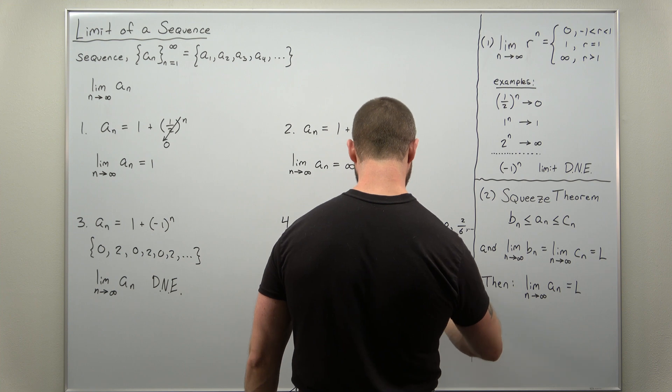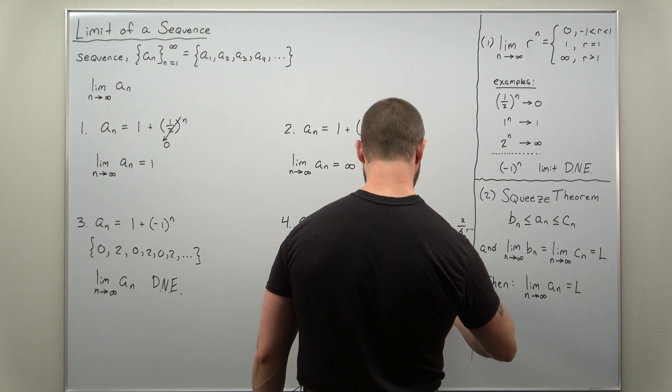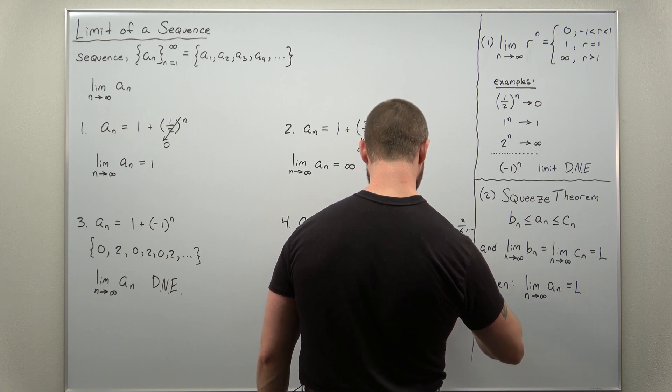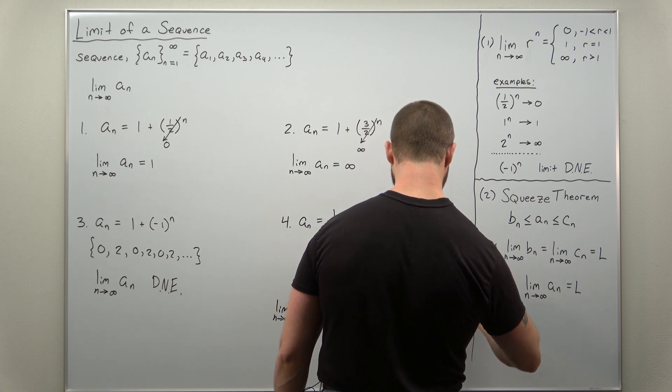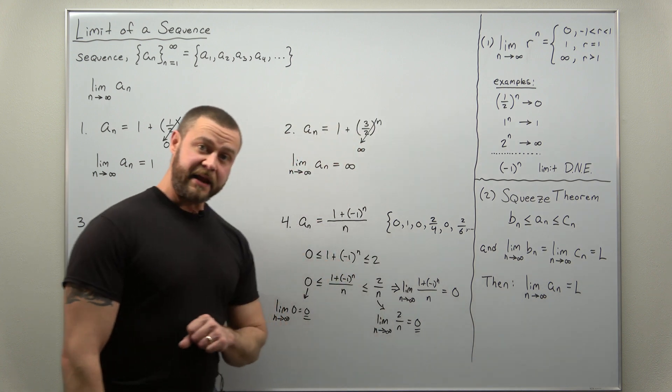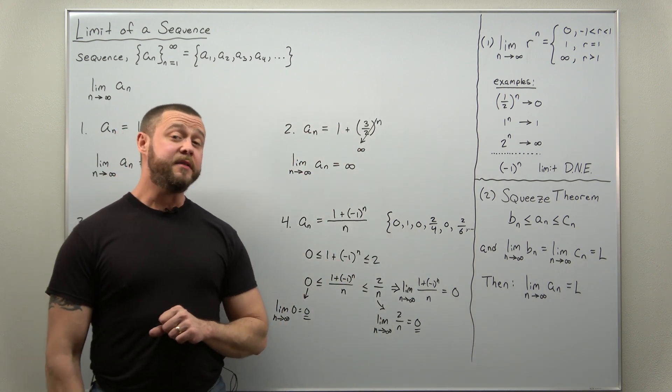So basically from here, we would write that the limit as n approaches infinity of one plus negative one to the n over n, that equals zero by applying the squeeze theorem.